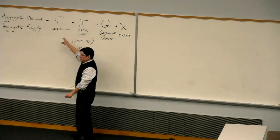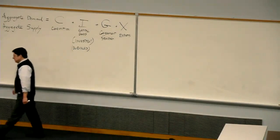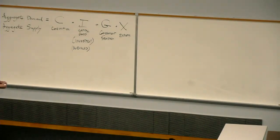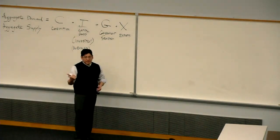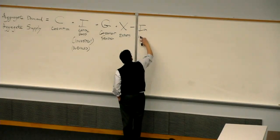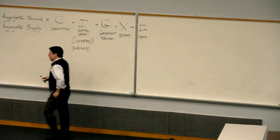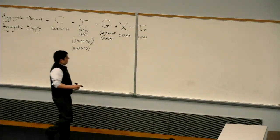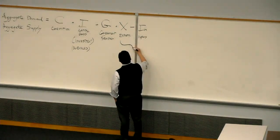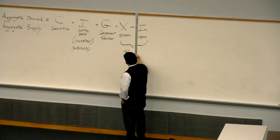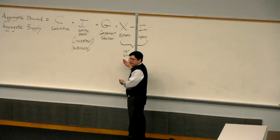Similarly, some of what you consume may not have been made here — for example, this thing says 'Made in Taiwan.' So if we want this whole thing to equal GDP, anything that was made outside has to be subtracted — we have to subtract imports. The textbook lumps exports and imports together and calls them net exports, which simply means exports minus imports.